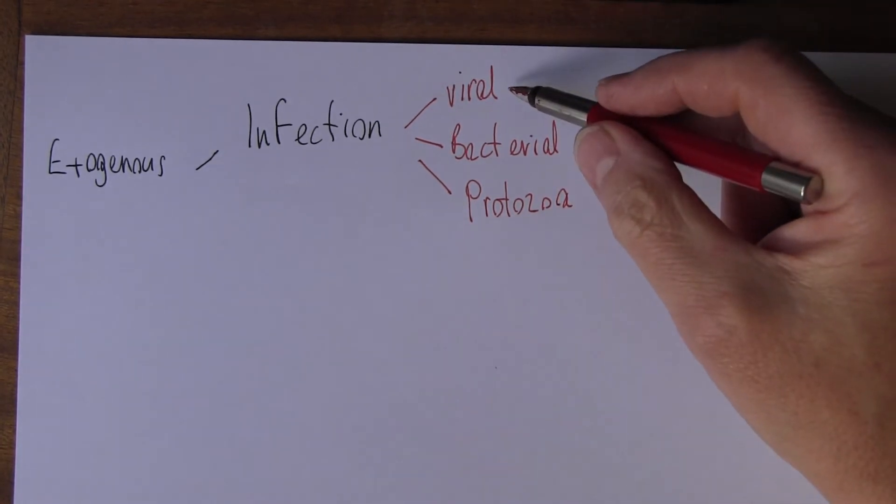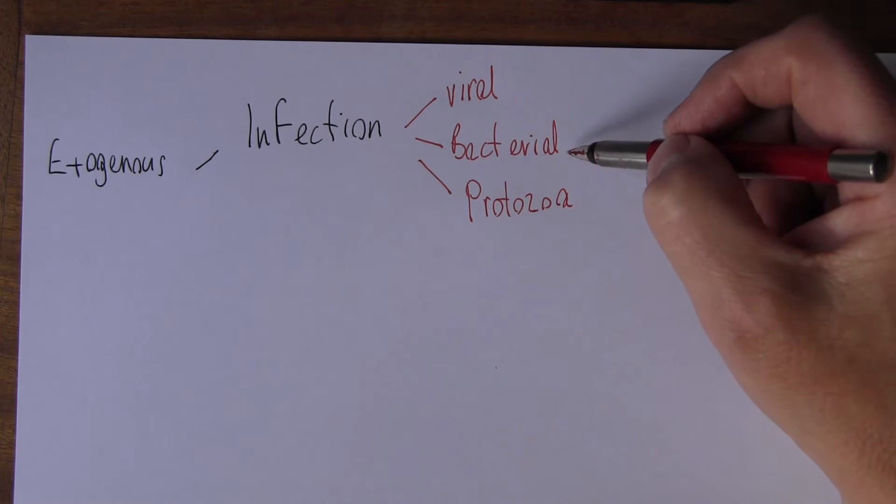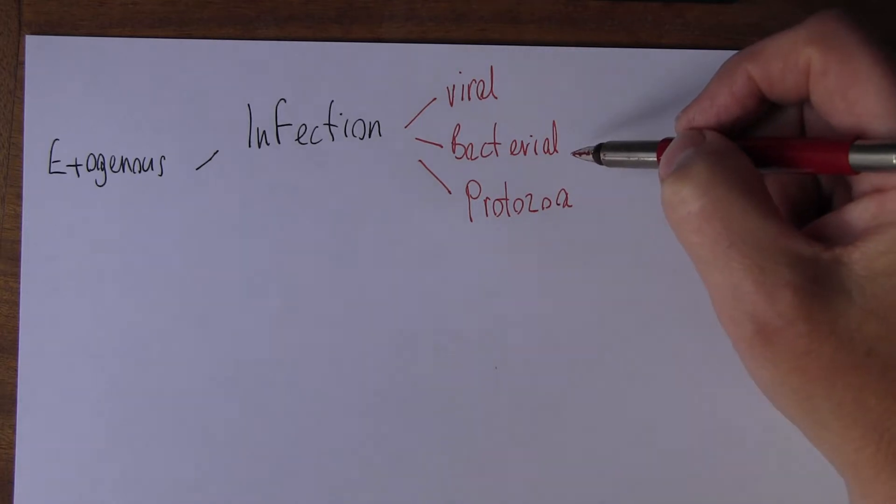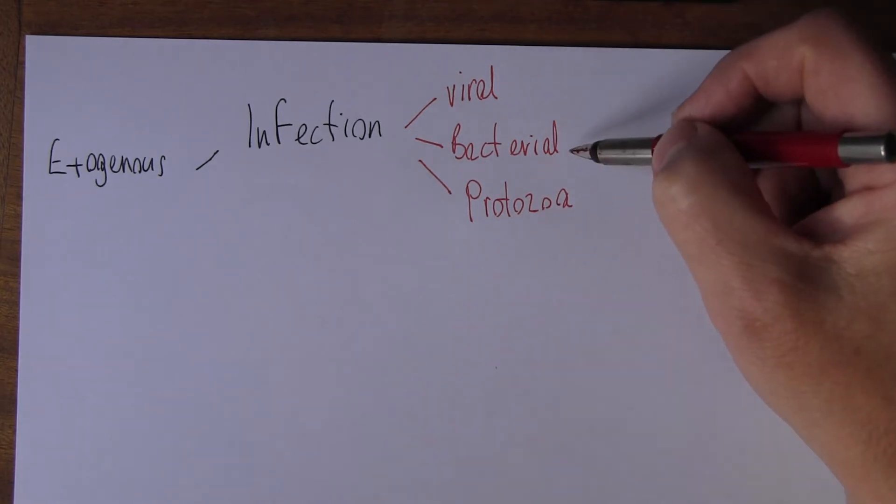So viral infections: influenza, viral hepatitis, the common cold. Bacterial infections - many bacterial infections: wound infections, streptococcal and staphylococcal infections, tuberculosis. Most pneumonia is caused by bacteria, but pneumonia can be viral as well.